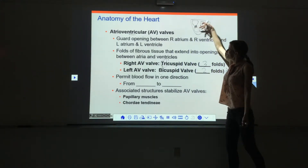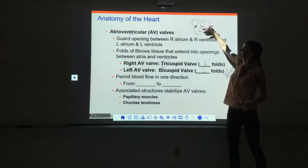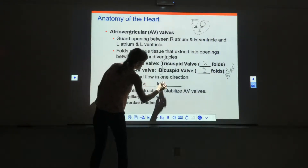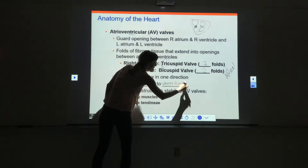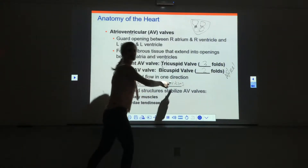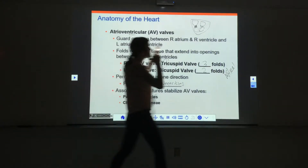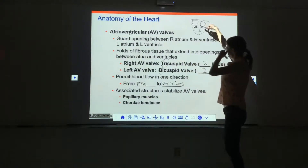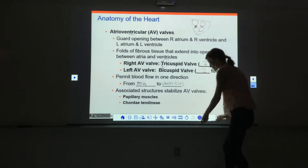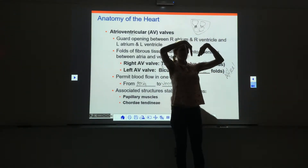These valves allow the blood to flow only in the correct direction — from the atria to the ventricles. From the right atrium to the right ventricle, and from the left atrium to the left ventricle. They do not allow blood to flow backwards. If the valves just existed as flaps with nothing else attached, they would be absolutely useless — just flaps of tissue hanging down into a hole.